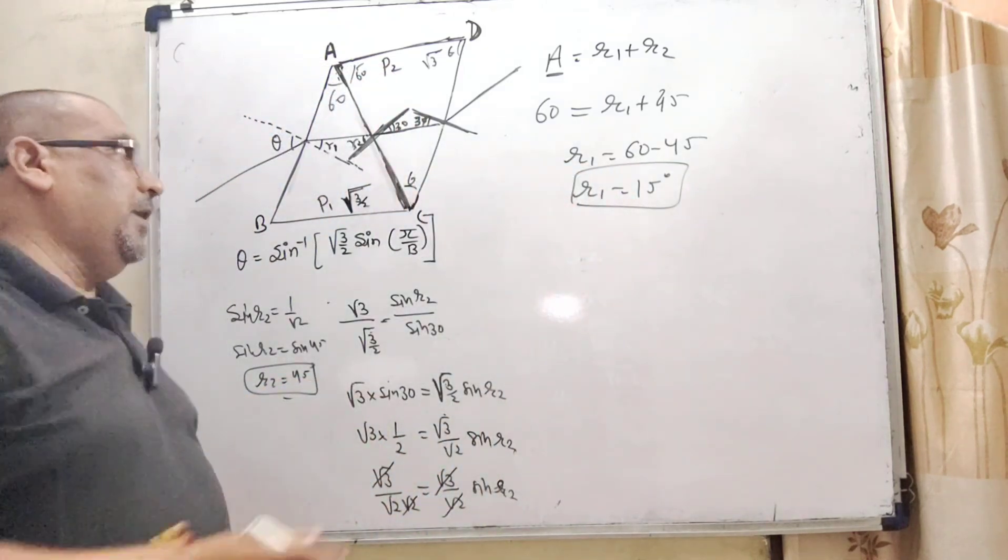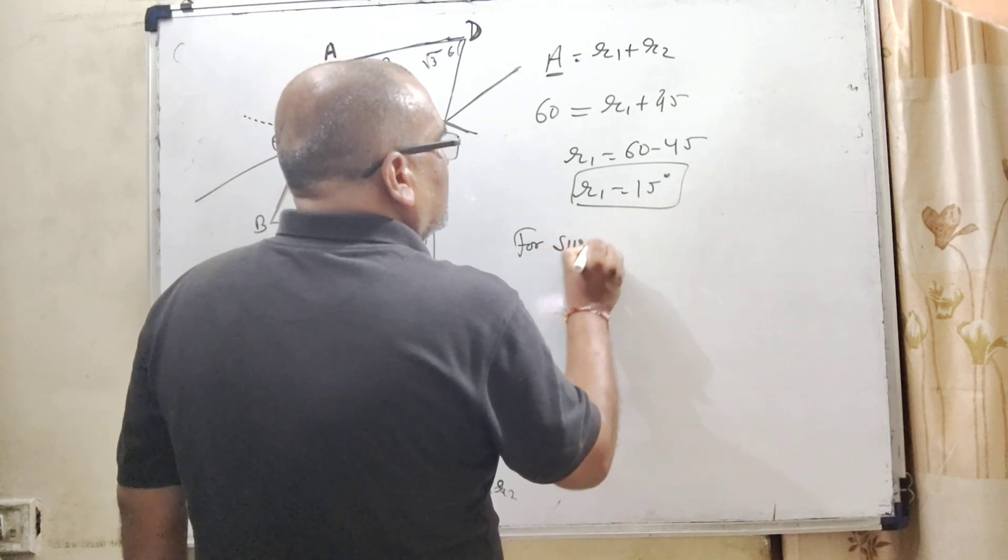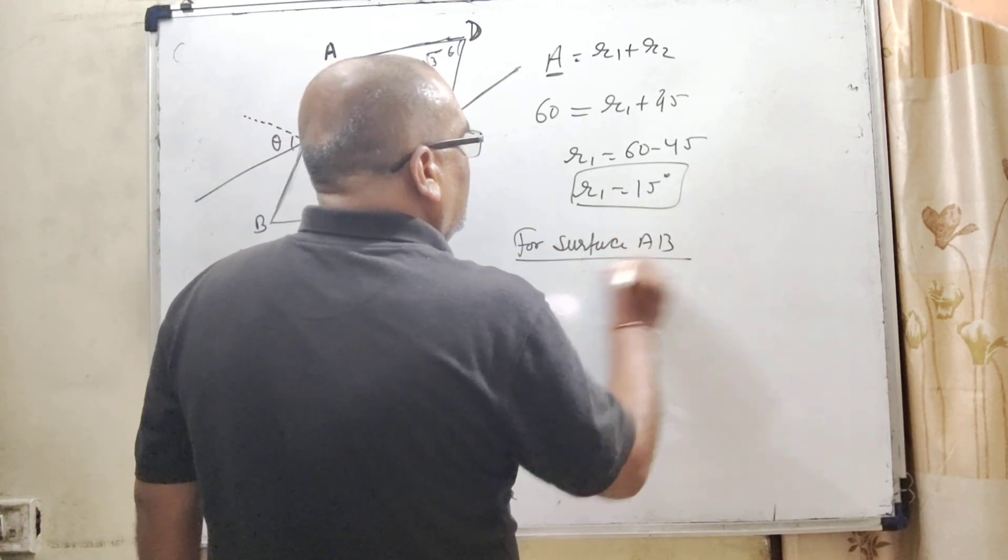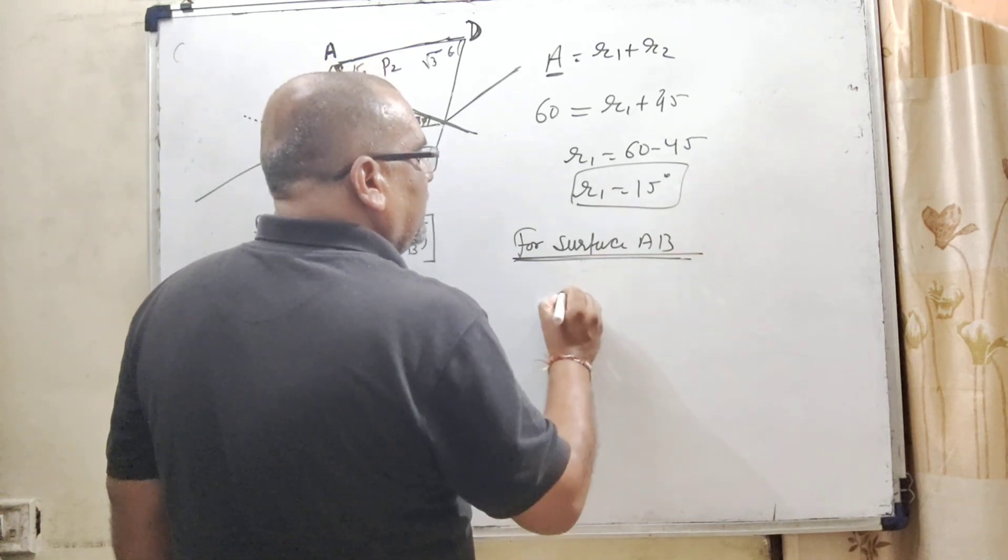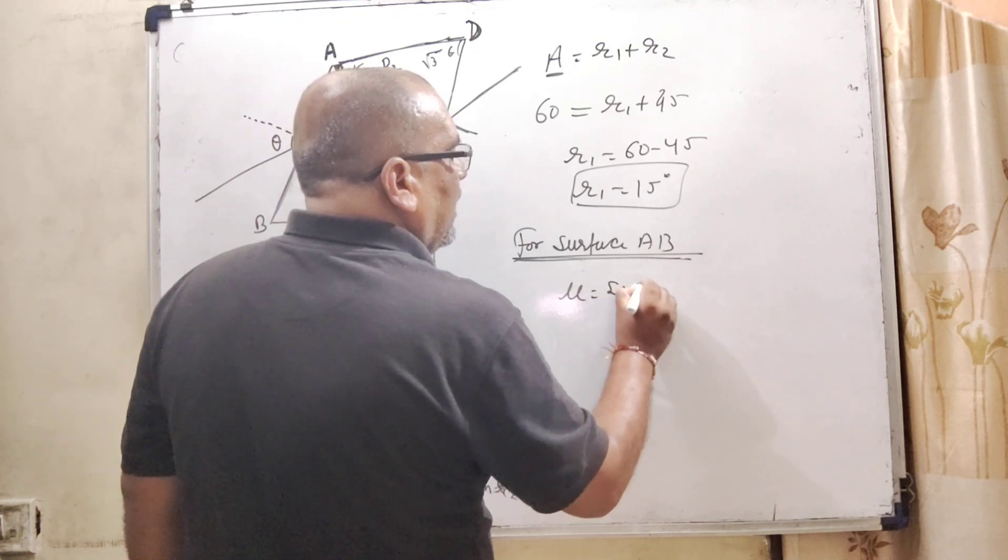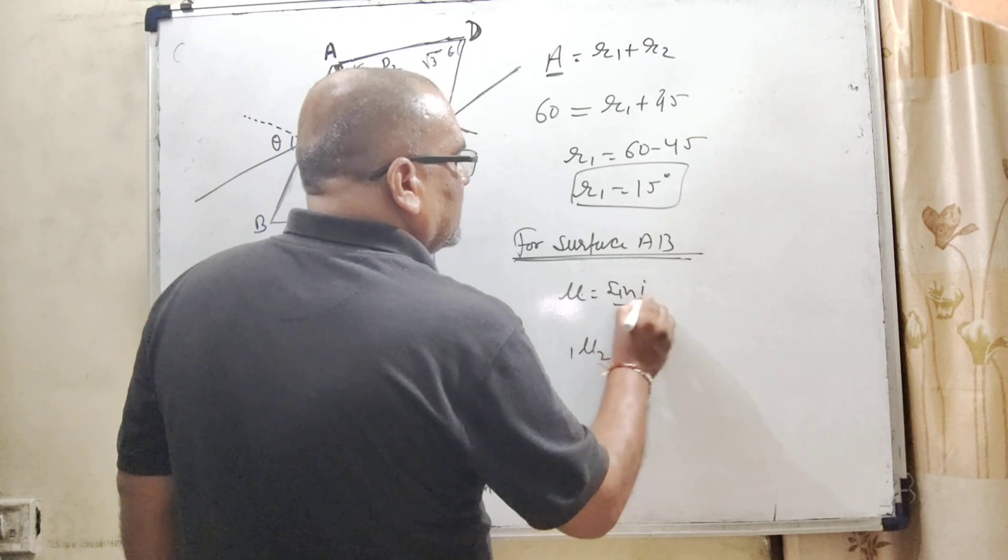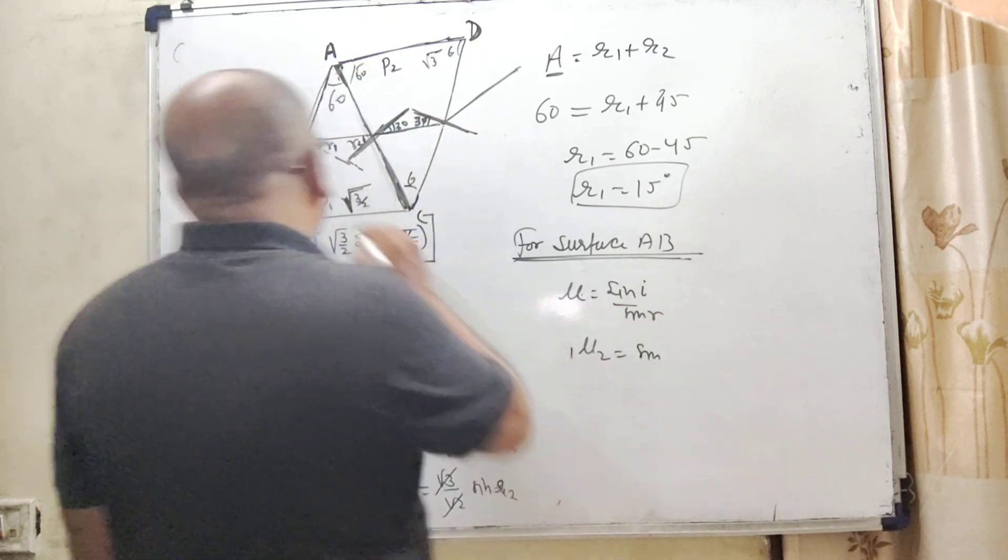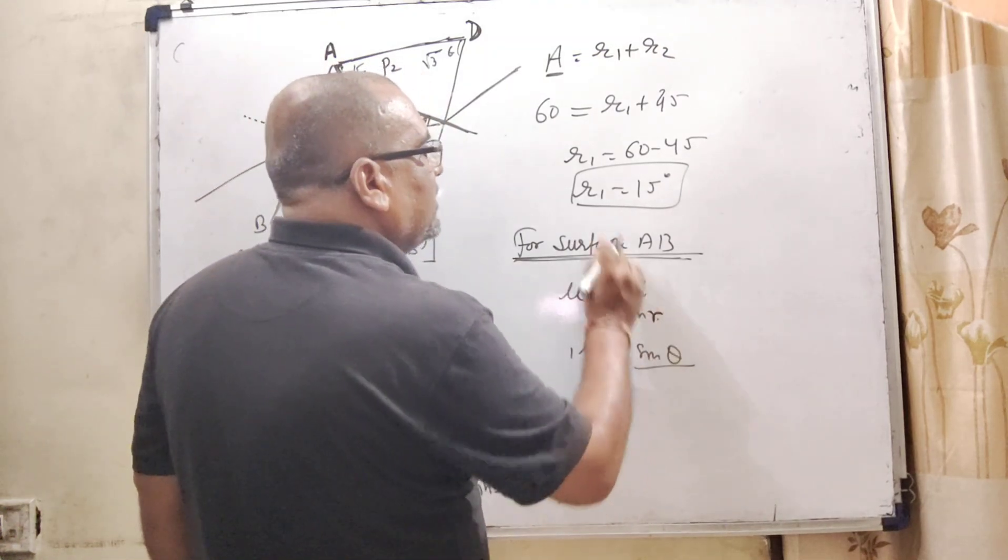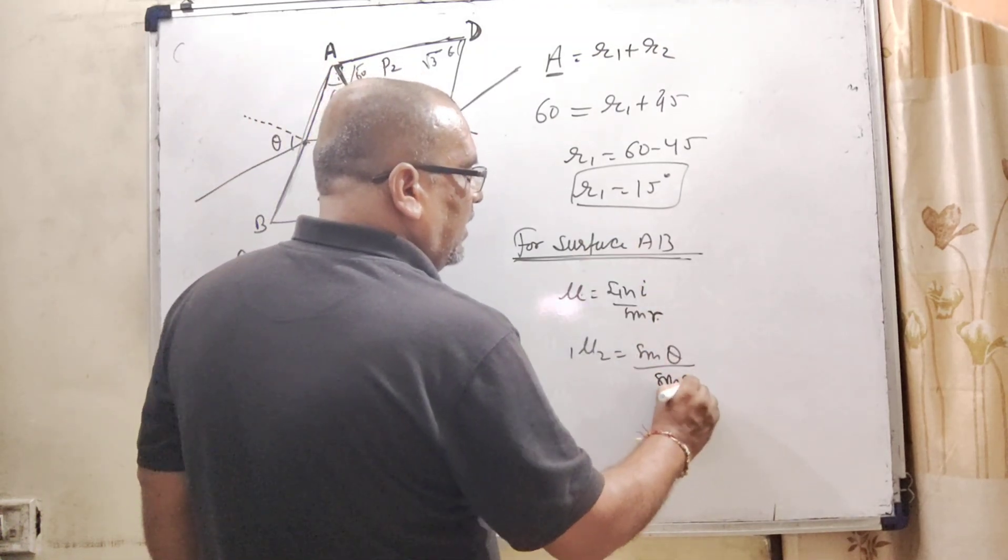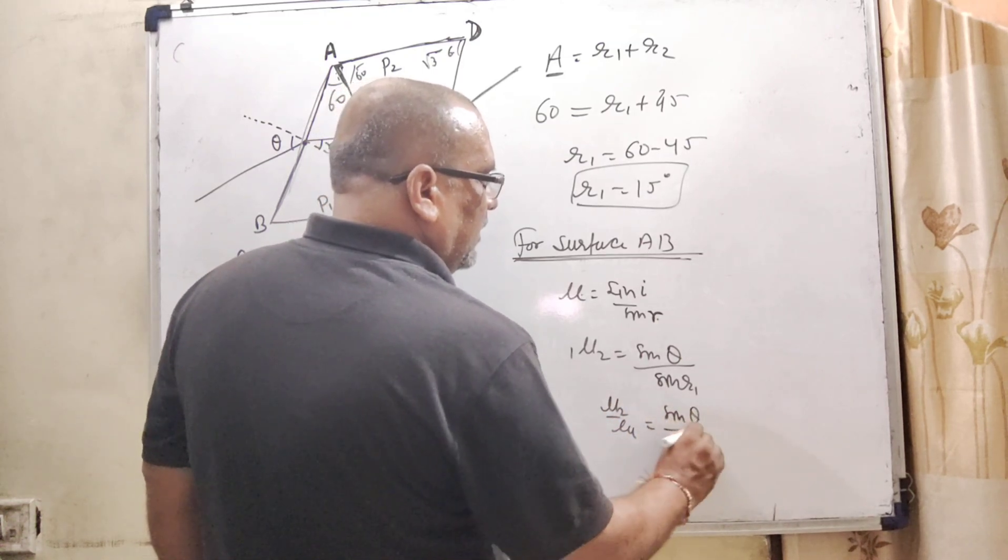Now again for the surface AB. Again using here the prism for the deviation condition, that is mu equal to sin I upon sin R. So here 1 mu 2, sin I is theta, and here angle of refraction is R1. Here mu 2 upon mu 1 is equal to sin theta upon sin R1.